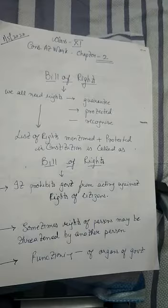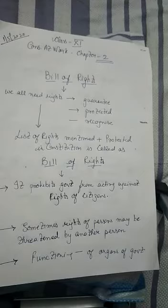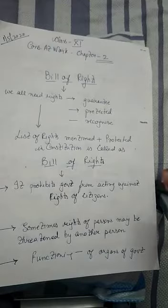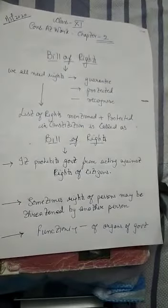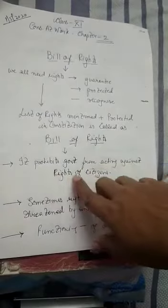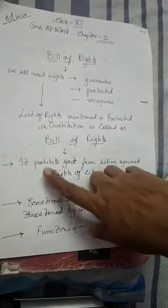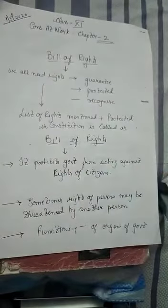In a democracy, every individual has a right that certain rights should be given to him by the government and government should recognize them. Yeh Bill of Rights ki teen advantages hain. Number one, it prohibits - rokta hai - government ko for acting against the rights of citizens.